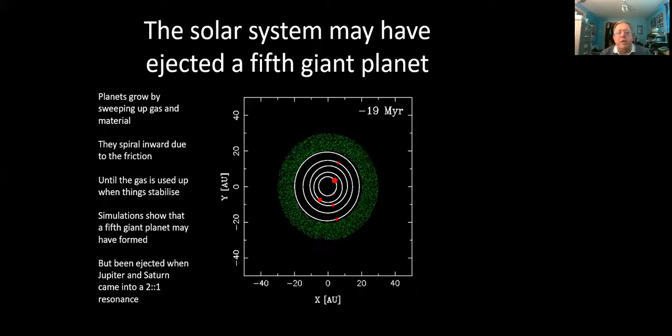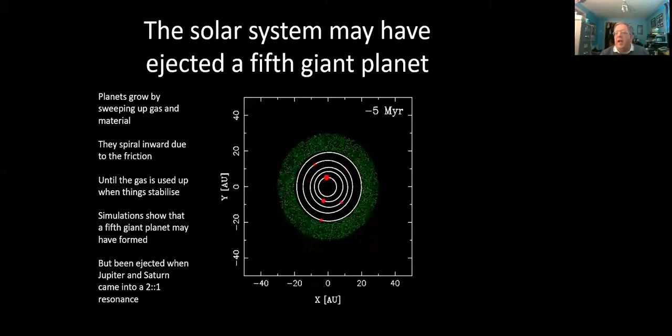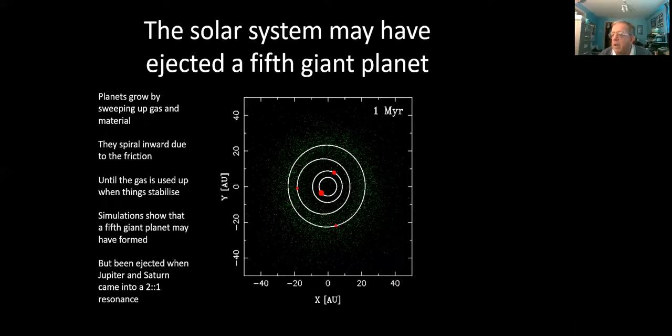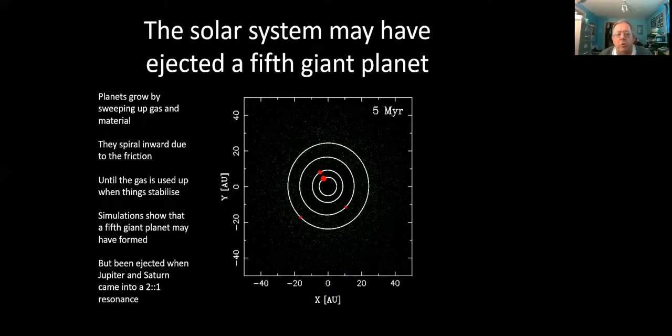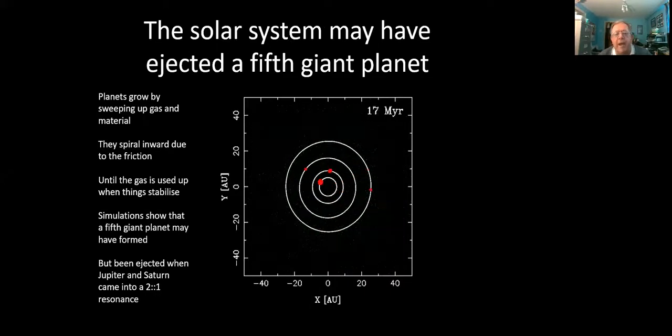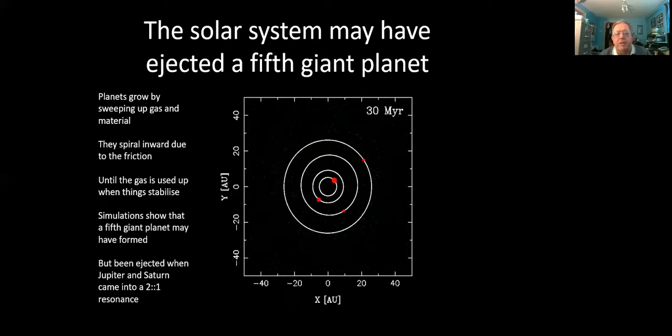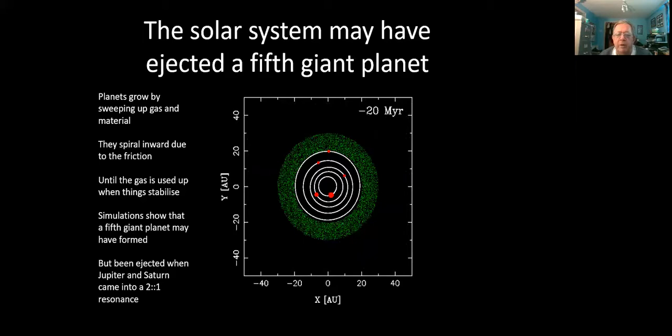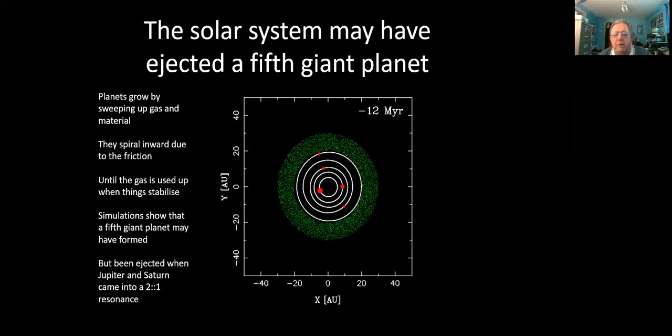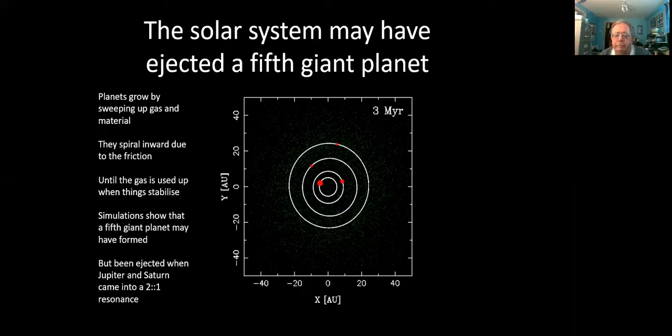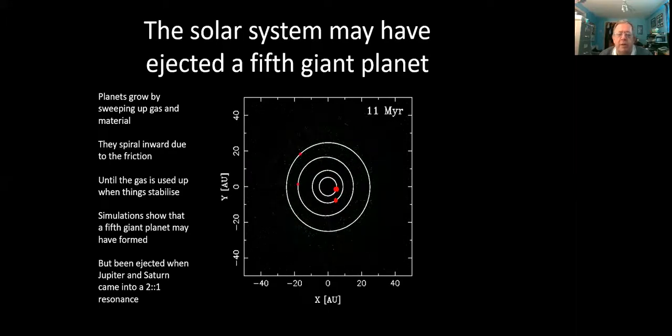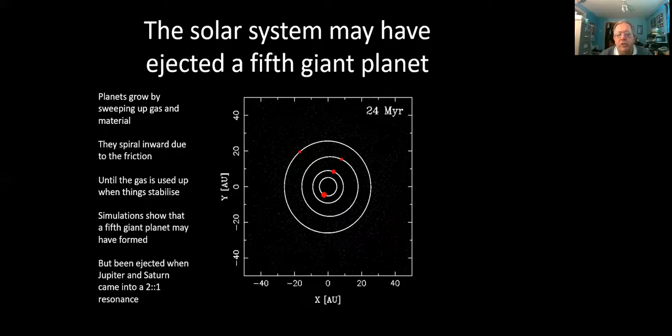And of course, we have this idea that in our solar system, early on when it was forming, it probably began with five giant planets. But as Jupiter was growing and picking up all the material around it, it spiralled inwards until it got into a resonant two to one orbital period relationship with Saturn.